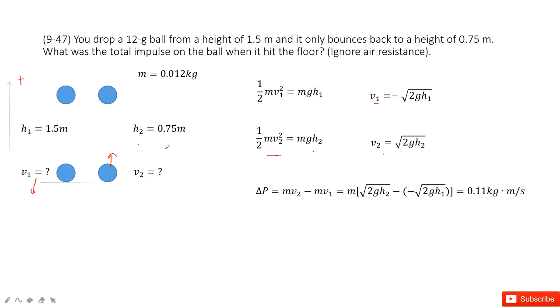Now, can you find the change of the momentum? The change of the momentum is called impulse. So impulse is just using final momentum minus initial momentum. And then you input v1 and v2. You can get the final answer.